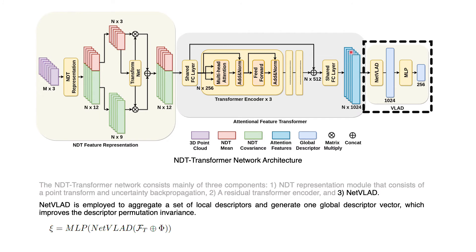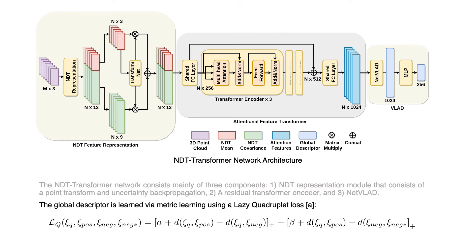Next, the learned local features can be aggregated using VLAD layers to form the global descriptor for place recognition. Finally, the global descriptor is learned by metric learning using a lazy quadruplet loss.